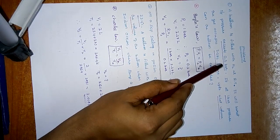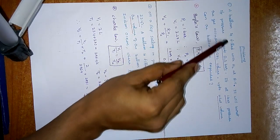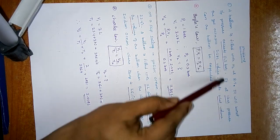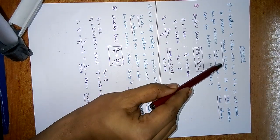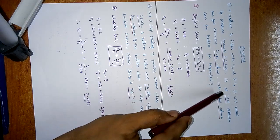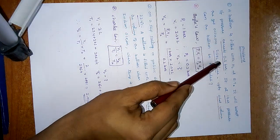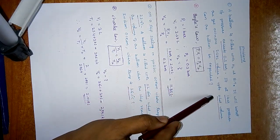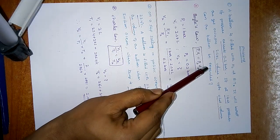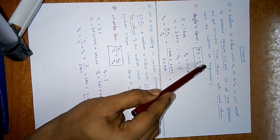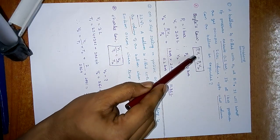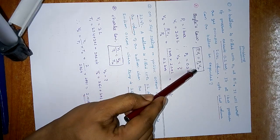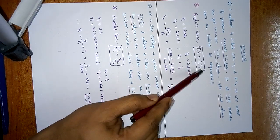Now I will discuss some important problems. A balloon is filled with hydrogen at room temperature. It will burst if pressure exceeds 0.2 bars. If at 1 bar pressure the gas occupies 2.27 litres volume, up to what volume can the balloon be expanded? We solve this using Boyle's law: P1V1 = P2V2.